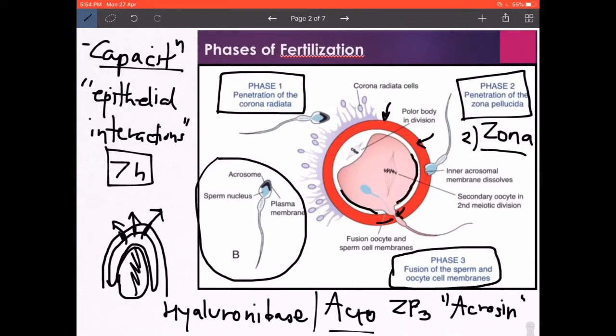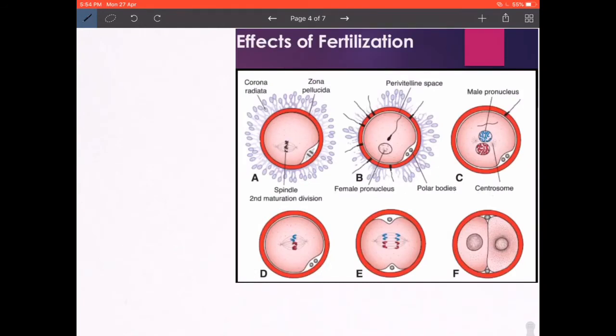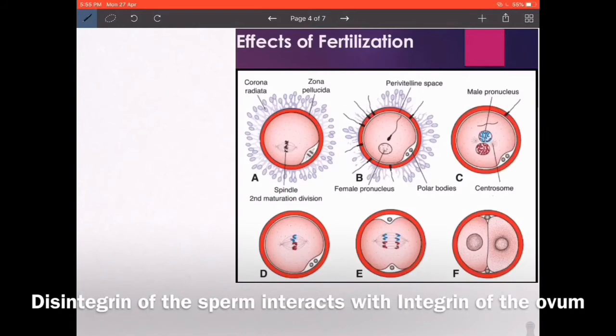If you observe carefully, there is a fusion between the cell membrane of the sperm and the oocyte. What has gone inside is the head and the tail. A very important MCQ: the mitochondria are not really involved in the formation of the zygote. It is completely the maternal mitochondria that are inherited by the zygote. The meeting of the cell membrane of ovum and sperm has epithelial interactions. The best way to put it is that the disintegrin in the cell membrane of the sperm interacts with the integrin on the cell membrane of the oocyte.